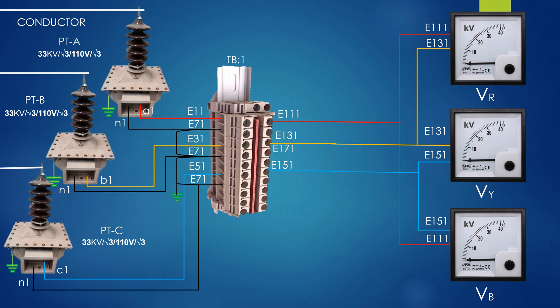By this process, we can only measure three-phase line voltage or phase voltage by using three numbers of voltmeters. If we use a selector switch, we can measure all voltages by using a single voltmeter.